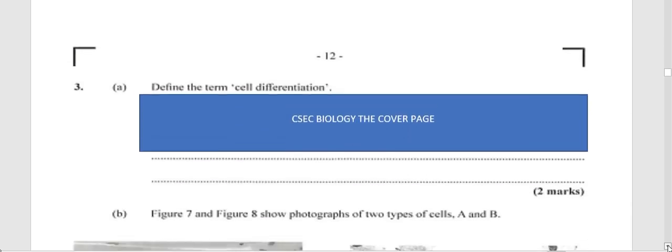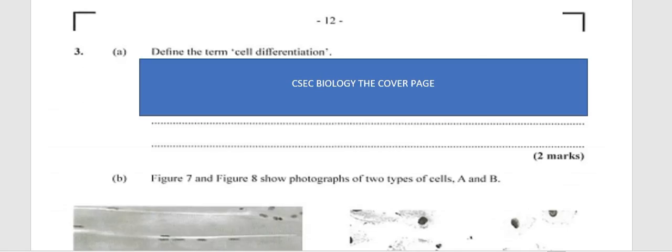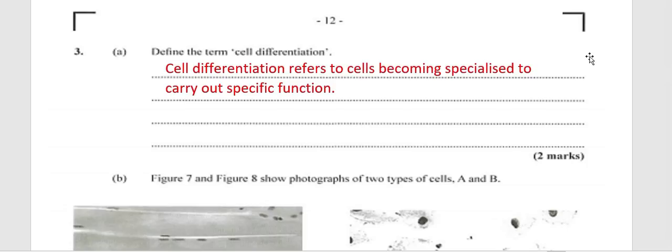That completes Question 2 — 15 marks. Moving to Question 3, which looks at cells. Define the term 'cell differentiation' — also referred to as cell specialization. Cell differentiation refers to a cell becoming specialized to carry out a particular or specific function, such as nerve cells, red blood cells, different types of white blood cells, and sperm cells.